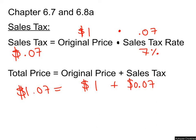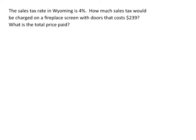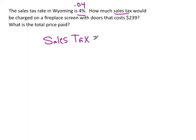Now let's look at a more challenging word problem. The sales tax rate in Wyoming is 4%. Whenever you see a percentage, immediately convert it to a decimal — 0.04, moving the decimal two places to the left. The question asks how much sales tax would be charged on a fireplace screen with doors that costs $239. Using our formula, sales tax equals 239 times 0.04.